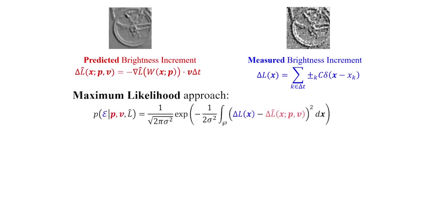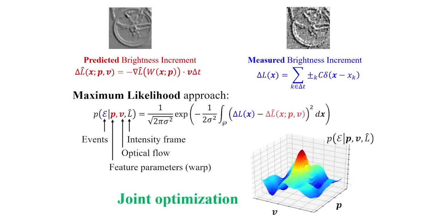We introduce a likelihood function which says how events are explained given the feature parameters, optic flow and image intensities. This model is based on a Gaussian distribution. At each time step, we find the new registration parameters p and optic flow v by jointly maximizing this likelihood which we use to continuously track features.